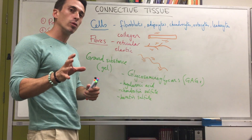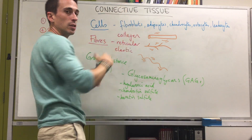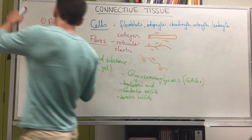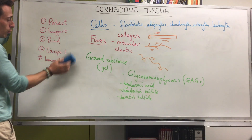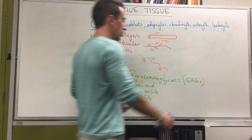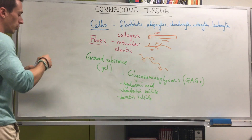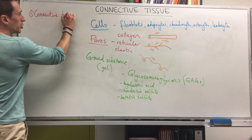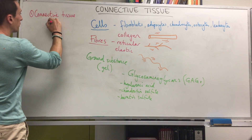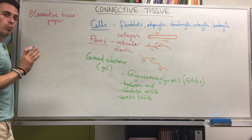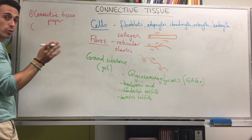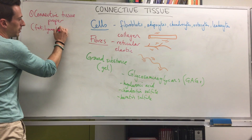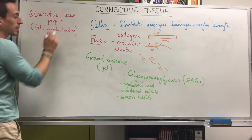What I want to do lastly is name some different types of connective tissue, and subsequent videos will talk about them more specifically. So we have connective tissue proper — predominantly this includes fat, ligaments, and tendons.